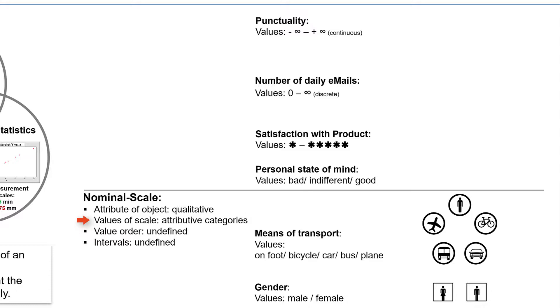The values of these two and all other nominal scales have attribute categories as values and not numbers. It follows that there is also no order of values on a nominal scale. And you can see that the order male-female is just as good and suitable as the order female-male.